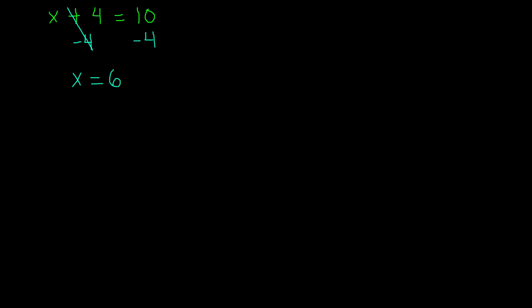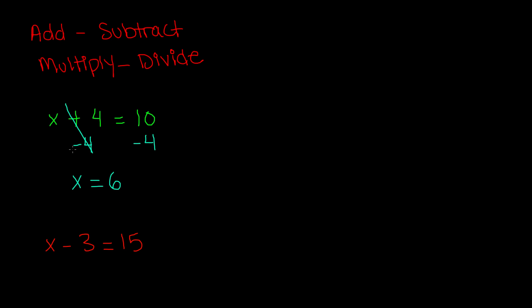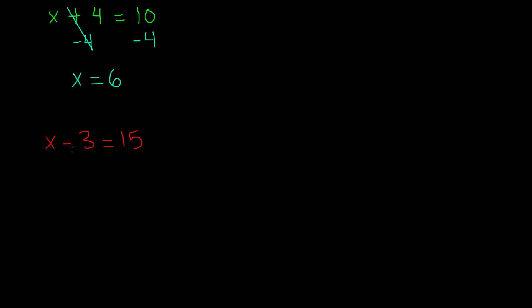So let's do another example. This time let's say we have x minus 3 is equal to 15. So this time we have subtraction in our problem. So we know that the inverse of subtraction is addition, and so we're going to have to add 3 to both sides to get our variable alone.